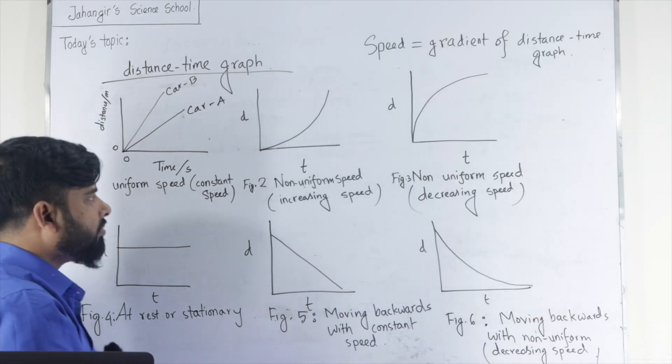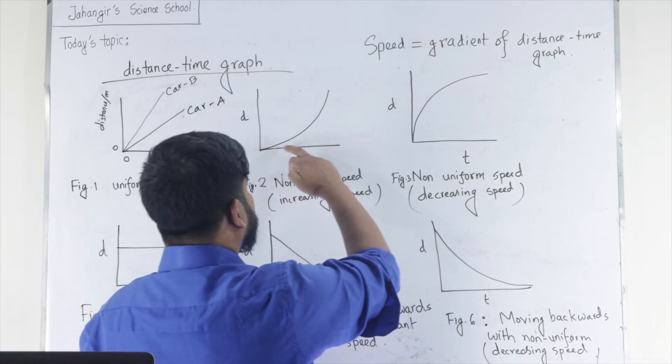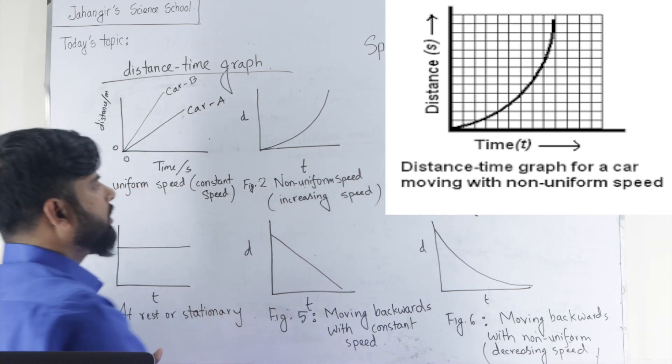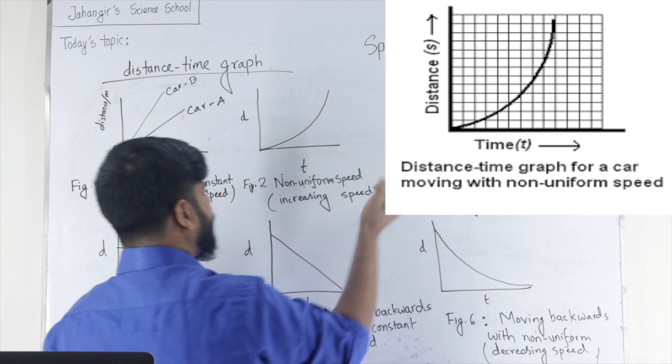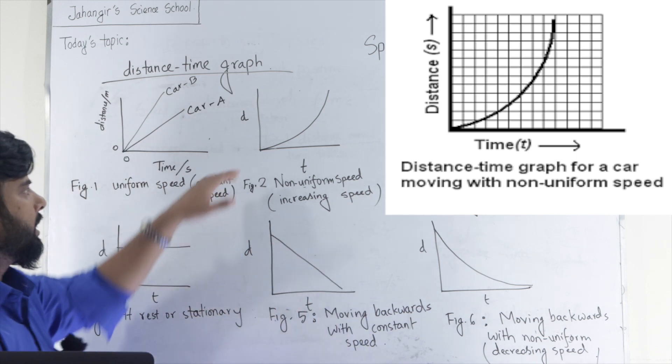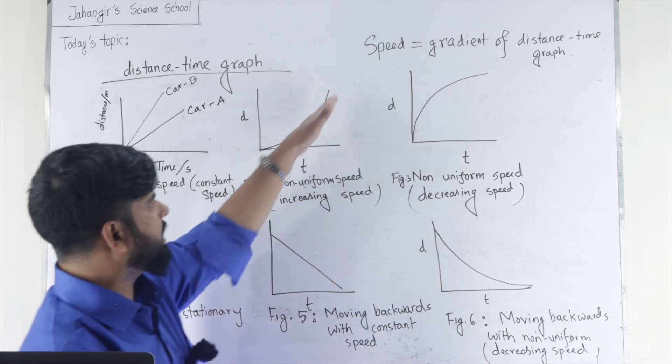Figure 2. Here, distance time graph is a curved one. So, it is non-uniform speed, but gradient or slope of the distance time graph increases gradually.